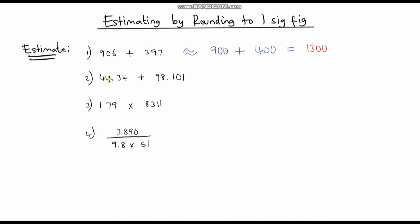The next one: 44.34 plus 98.101. That's going to be approximately equal to 44.34 rounded to one sig fig, which is 40, and we add 98.101 rounded to one sig fig, which is 100. So it's approximately equal to 40 plus 100, which is 140.